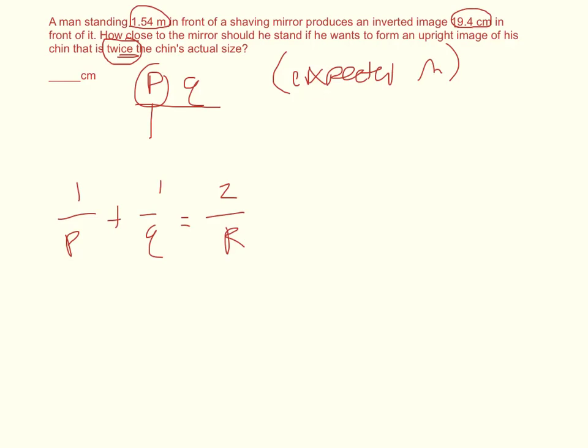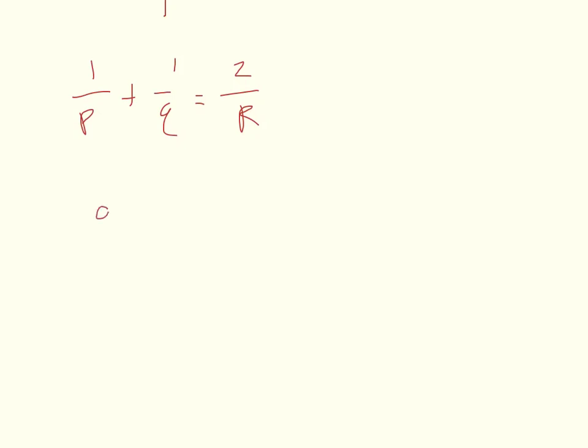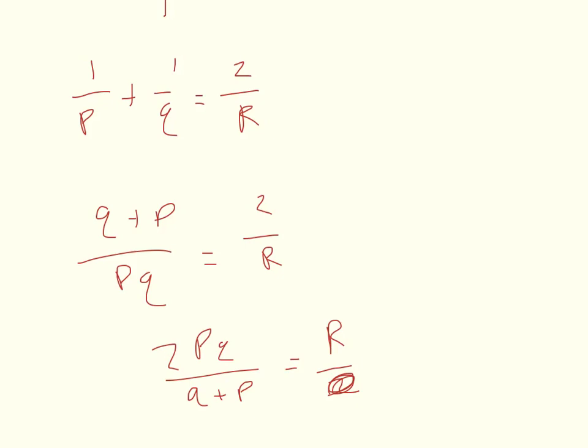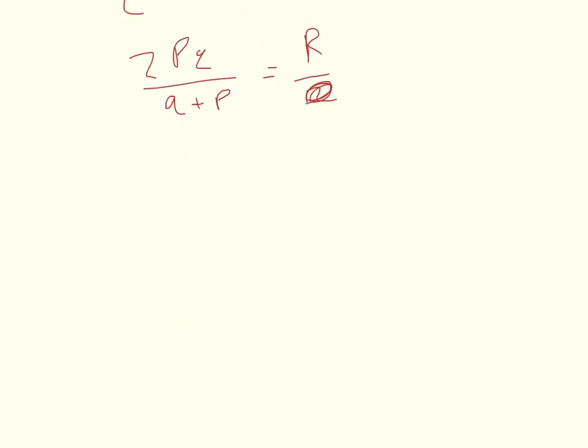And then of course you're going to have to solve for R. So you get Q plus P over PQ equals 2 over R. Take the inverse, so PQ over Q plus P equals R over 2. Times both sides by 2, you get 2PQ over Q plus P equals R.